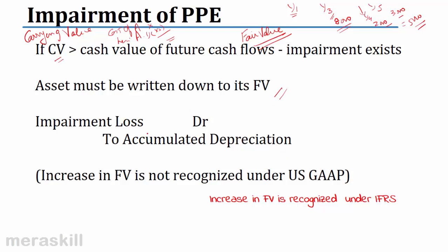How will you write it down to the fair value? We debit impairment loss — this will go to the income statement — and we take the difference to accumulated depreciation. Here, $8,000 is the carrying value but only $5,000 is the fair value based on future cash flows. So $3,000 would be taken as impairment loss to accumulated depreciation. If your carrying value is less than the fair value, it is not recognized. Only if there is a decrease in fair value do we have to provide for an impairment loss and take it to the income statement, increasing your valuation account.